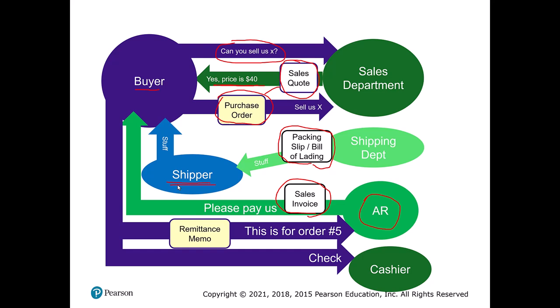Next, the buyer hopefully sends us the remittance memo, which tells us what the check actually applies to. A buyer might have 10, 30, 40, or 50 orders with us a month and want to pay with one check covering many of them, so we need to know how to tie them together. We also need to know which early-payment discounts the buyer is taking advantage of. We want to separate the cash from the remittance memo — we don't want the people handling cash to also be responsible for inputting changes into our ERP system.